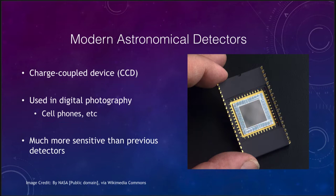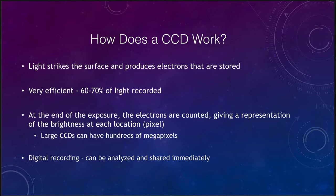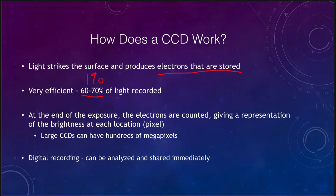In a CCD, light strikes the surface and produces electrons that are stored in the chip. Once you're done with your image you read it out and count the number of electrons. This is much more efficient — remember that photographic plates recorded only about one percent of light, whereas we can get 60 to 70 percent of the light recorded with a CCD. So exposure times can be much less: something that took an hour on a photographic plate may take only a minute or two on a CCD. It is also a permanent record, unlike the eye.